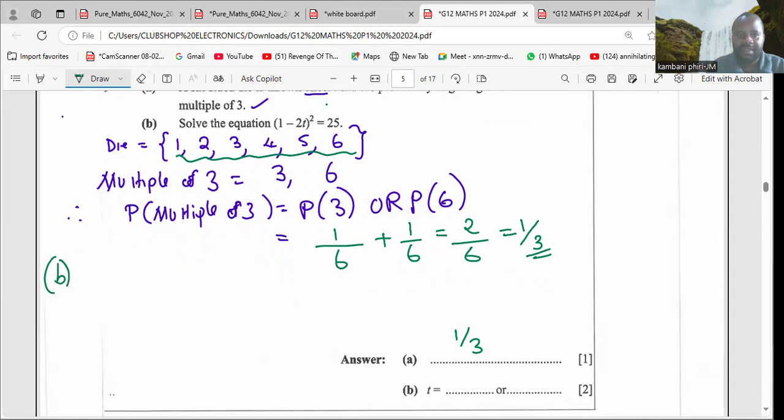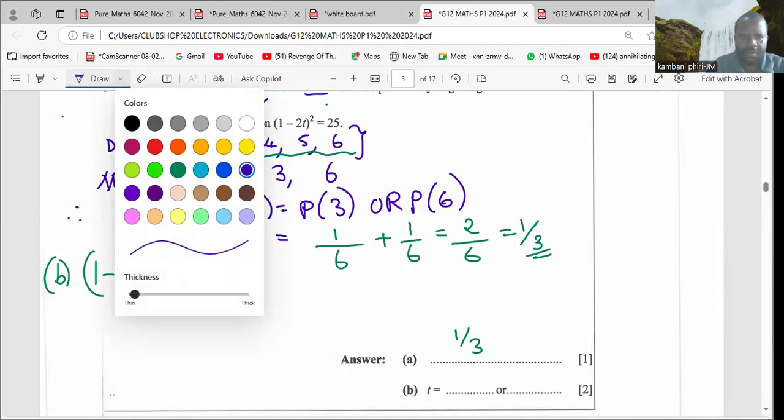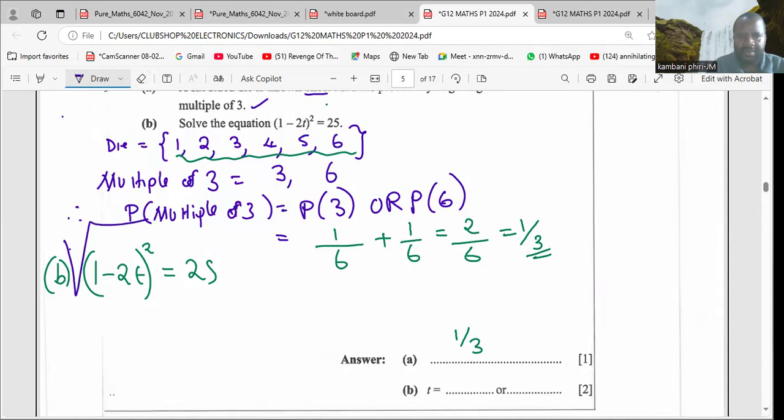Part B, we solve this equation: one minus two t squared equals 25. We can introduce the square root on both sides, so one minus 2t is equal to plus or minus the square root of 25, which is 5.